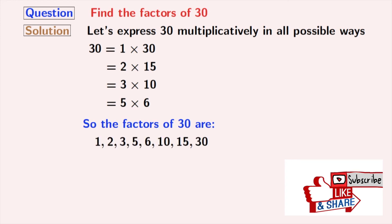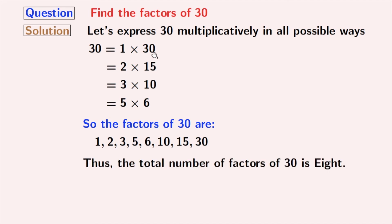Which are 1, 2, 3, 5, 6, 10, 15, and 30. So the total number of factors of 30 is 8.